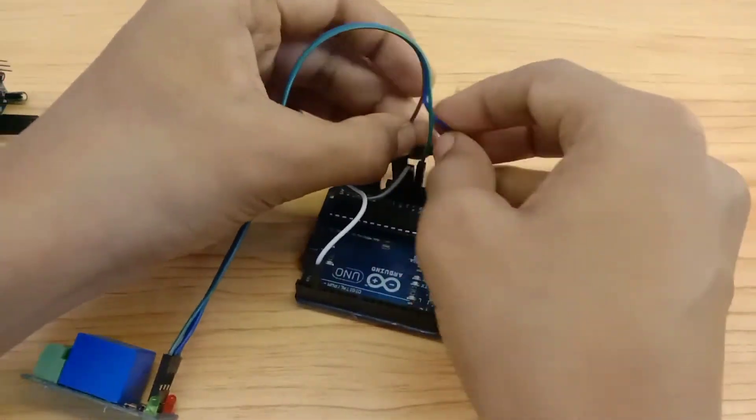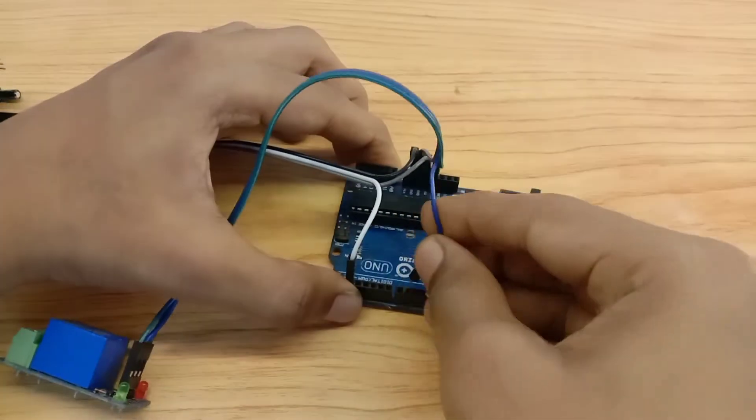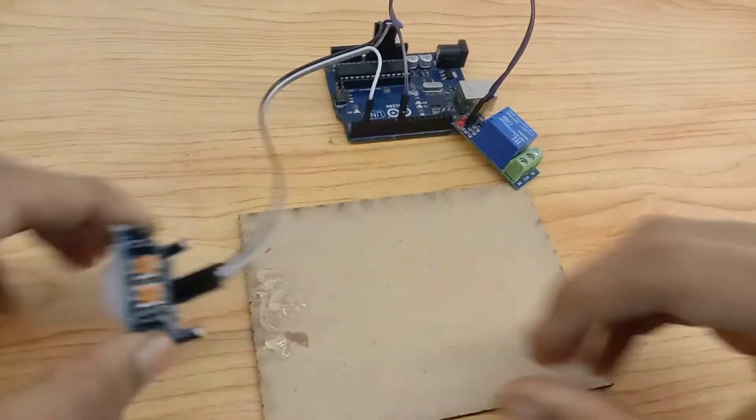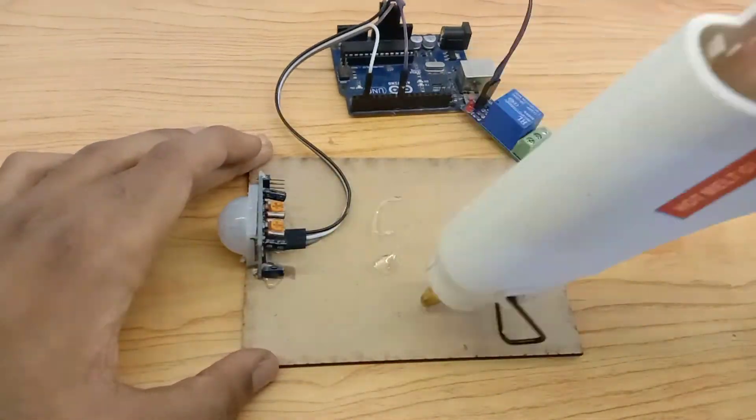You can see the wiring diagram given in the description. You can stick all the items on a wooden piece to make the project neat and compact.